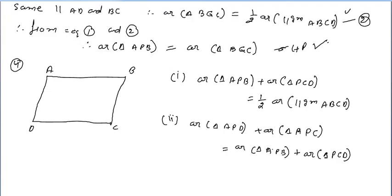Question number 4: ABCD is a parallelogram and P is any point in the interior of the parallelogram. We join P with A, B, C, and D. We have to prove that area of triangle APB plus area of triangle DPC equals half the area of the parallelogram.